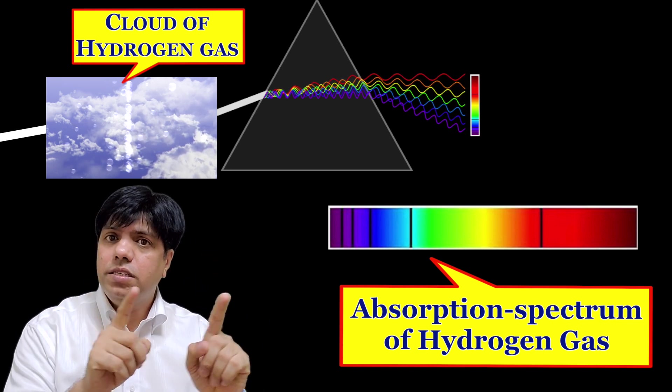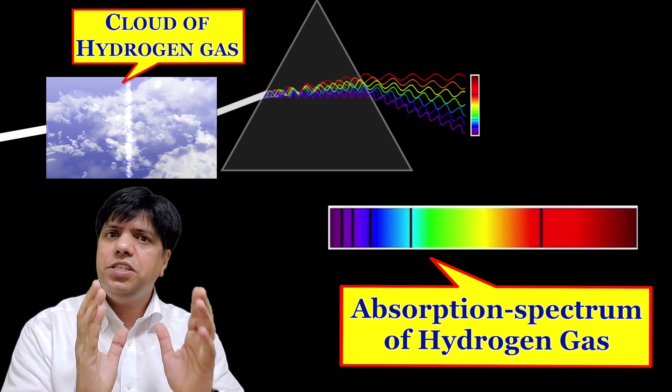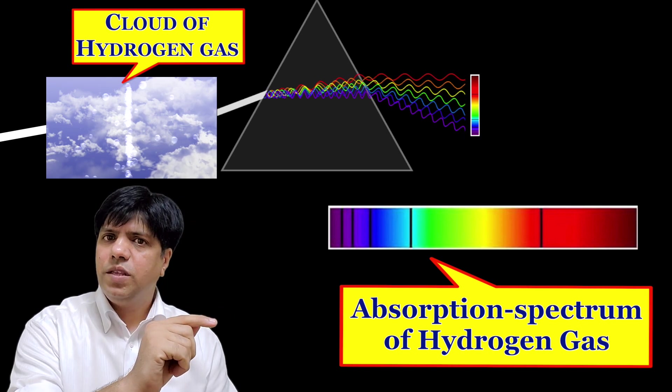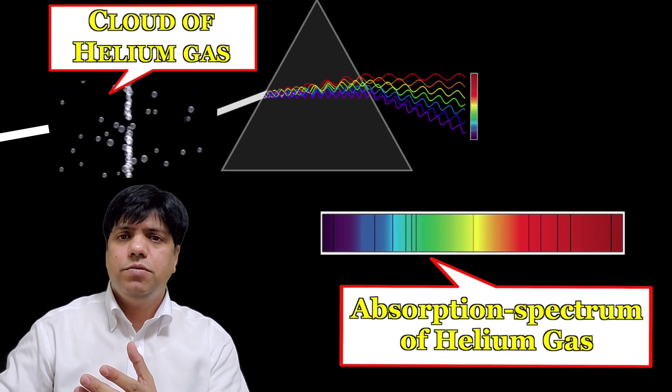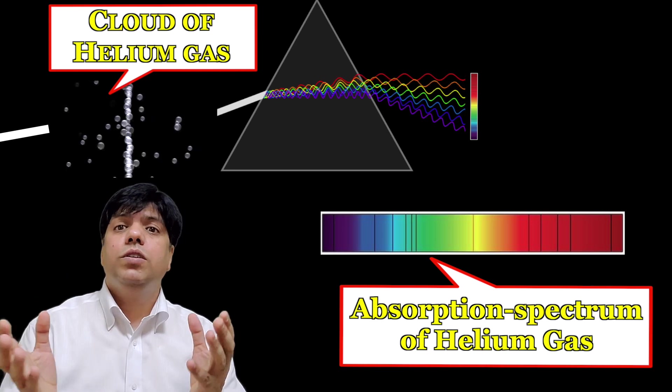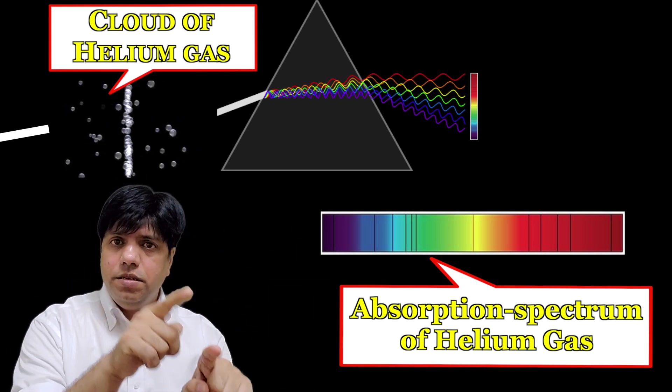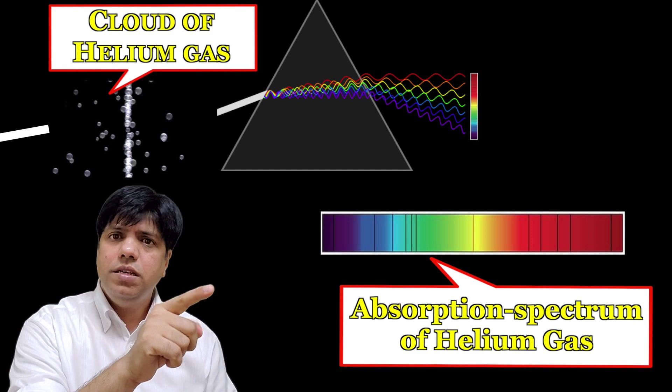So this is kind of a barcode very specific to hydrogen gas. Similarly for helium, what if you pass light through a cloud of helium gas? Well what you find is black lines but in a little bit different locations on the spectrum.